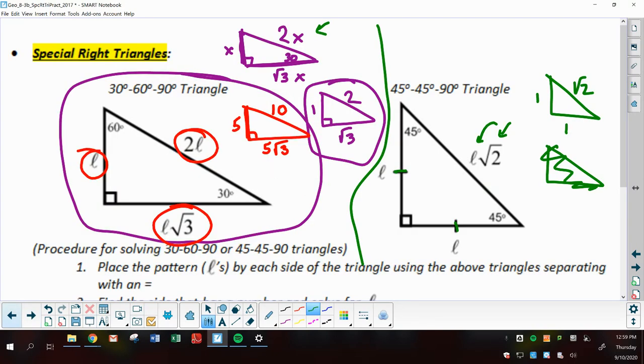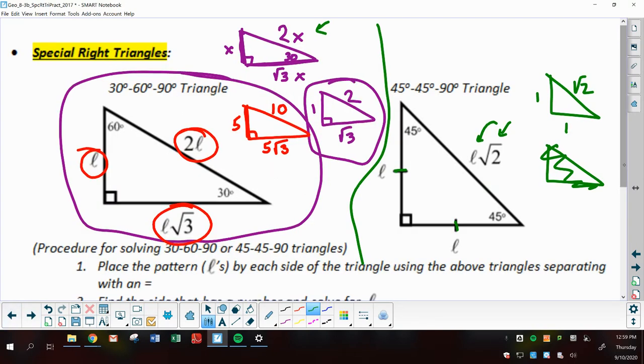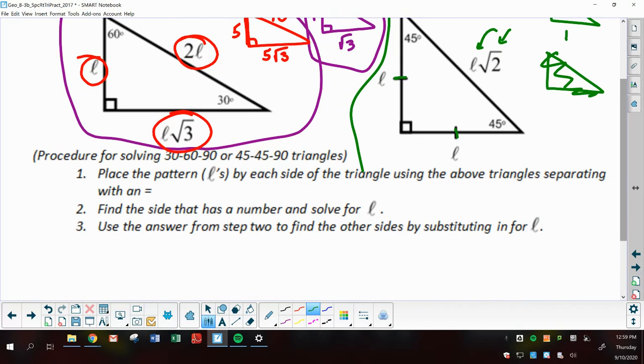And then once again, I could put 1s in here too. So this could be 1, 1, and then the hypotenuse is 1 times the square root of 2, so it's the square root of 2. And you could have a bunch of different ones, just like the 30-60-90. Now, I did have steps that I use with geometry. And that is, anytime you're solving these problems, you put the L or X patterns that I have circled up here in red by the appropriate sides.